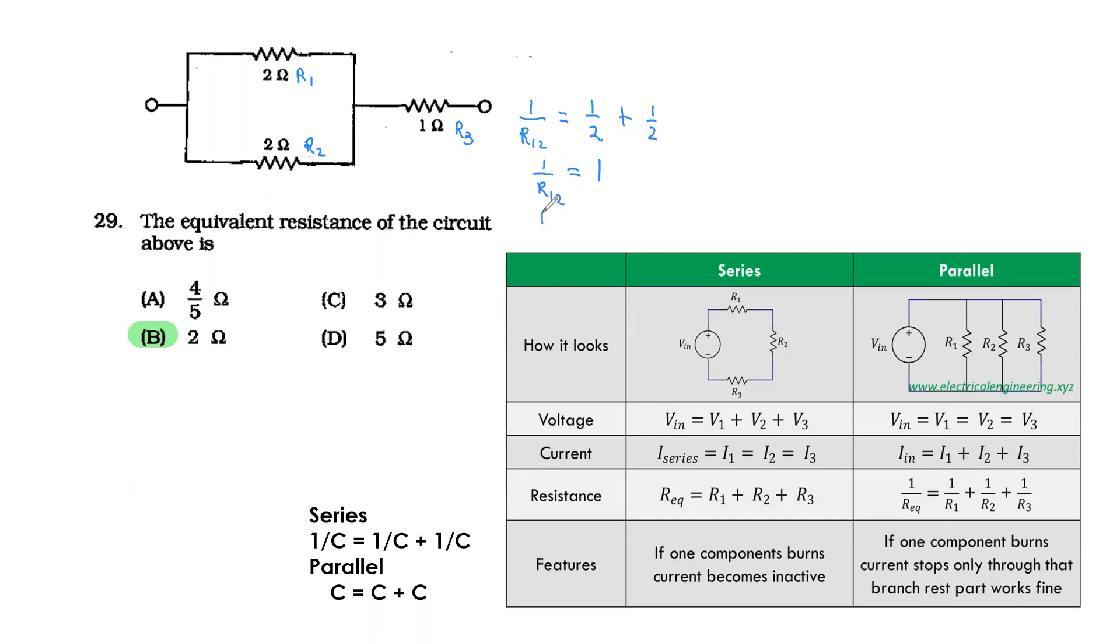That's not 1 fourth—1 half plus 1 half equals 1 whole. So 1 over R12, you already know R12 is 1. So it becomes like this.